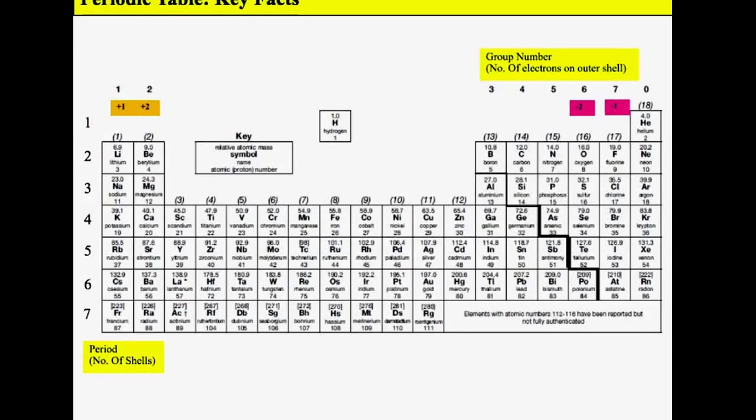The numbers down the side, one, two, three, are the period numbers. These tell you the number of shells. Strontium is in period five, so it's got five electron shells. It's also got two electrons in its outermost shell, or valence shell.